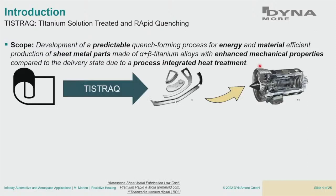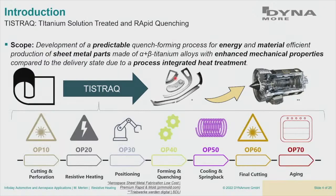Our aim is to go from the semi-finished part or from the coil, through the T-STRAC process, to single parts which can then be joined to sub-assemblies. The T-STRAC process is defined by several operations. The first is cutting and perforation — the blank outline dramatically influences drawing behavior and forming results. Then we heat it up with a resistive heating complex, position it inside a tool, do the quench forming in a cooled tool, have some additional cooling, a spring-back or shape deviation check, a final cutting, and an additional aging step.